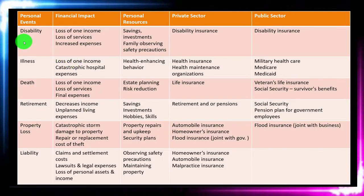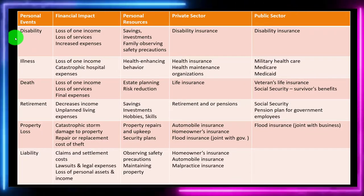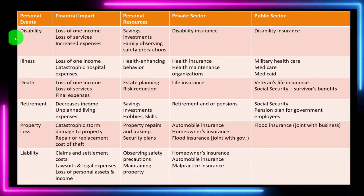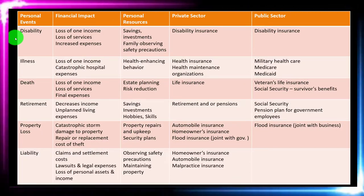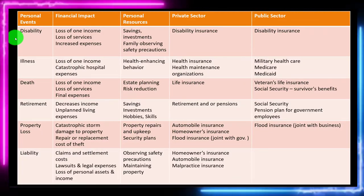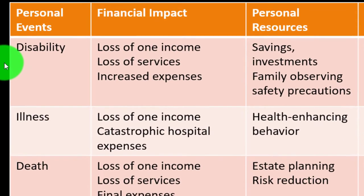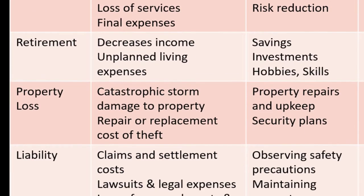Some of the things we might be applying insurance to — we went over these in the past, but just to review — would be things like disability, illness, death, retirement, property loss, and liability.